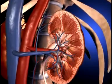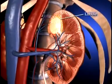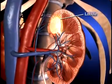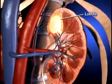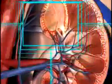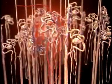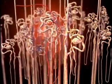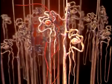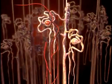The kidney is composed of up to 18 lobes. Each lobe is composed of nephrons. Nephrons are the functional units of the kidney, and each kidney contains more than one million nephrons.